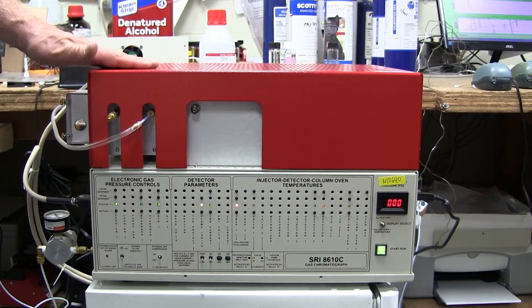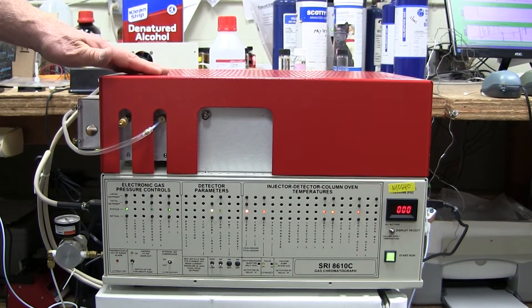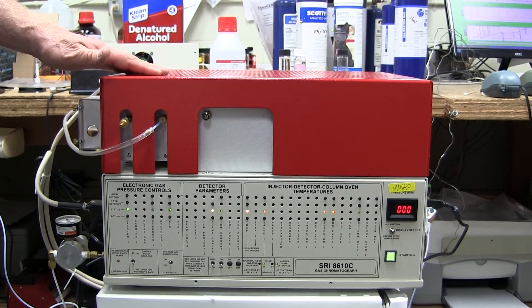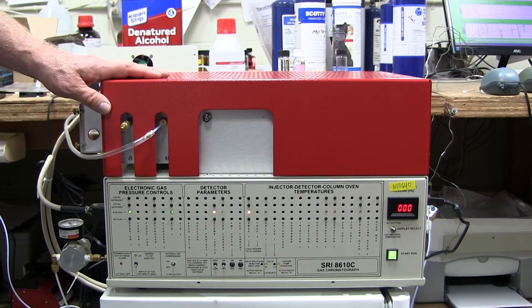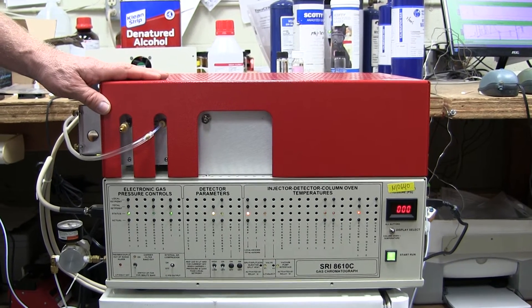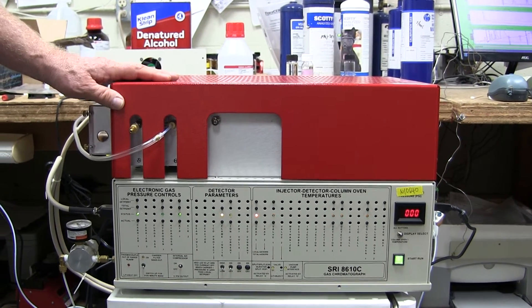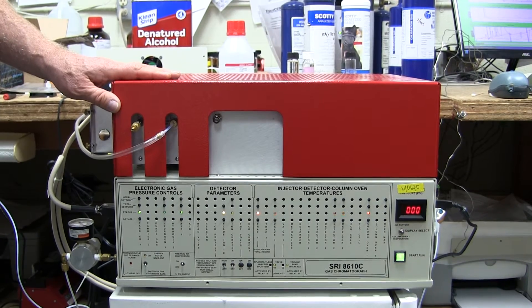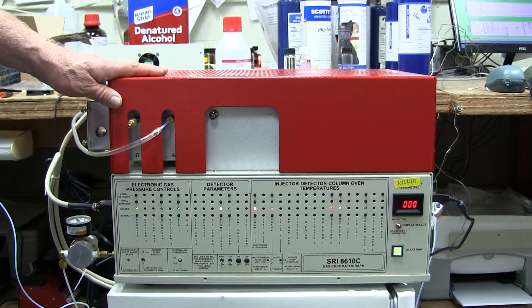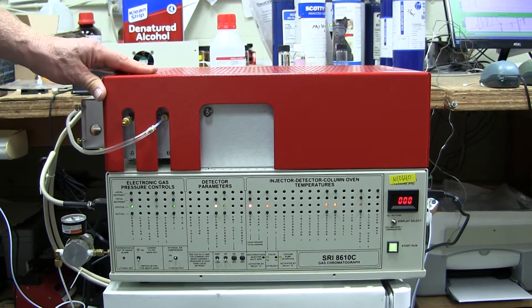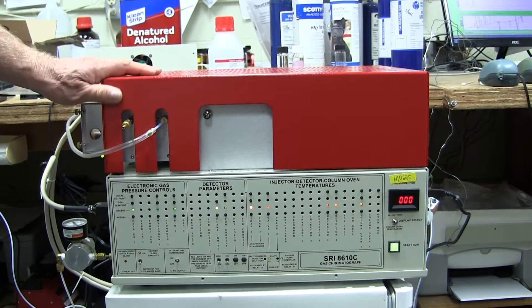This is the SRI model 8610 that's configured as a cryo pre-concentrator trapping GC with an FID detector. This particular one is aimed at volatile molecules like ethylene, propane, acetaldehyde, methanol, ethanol, and those kinds of molecules that come from plants.